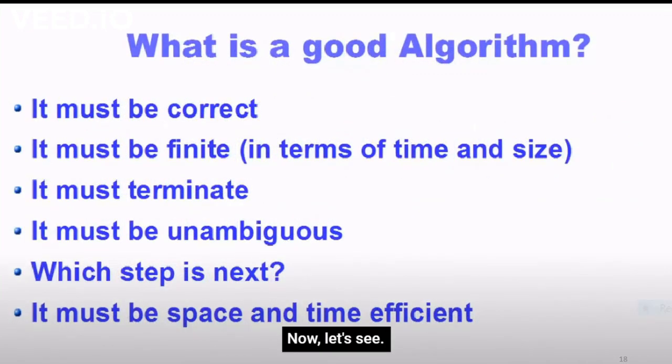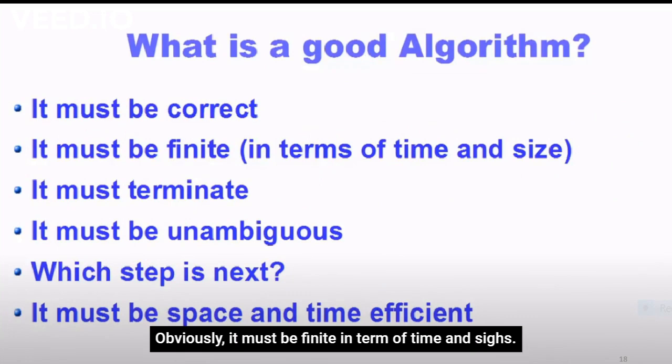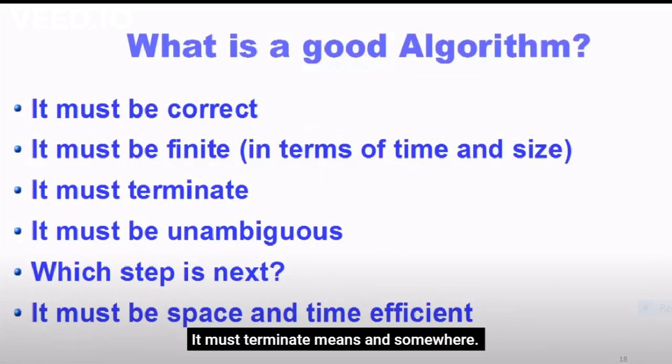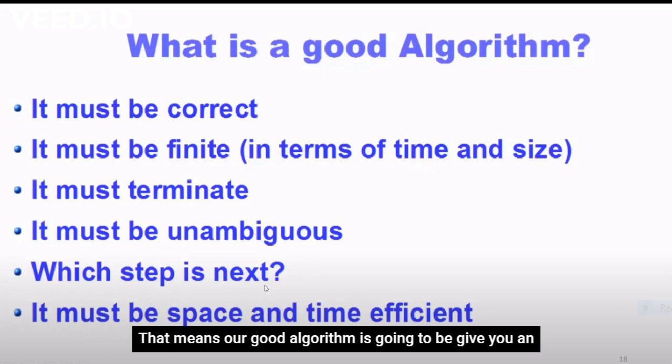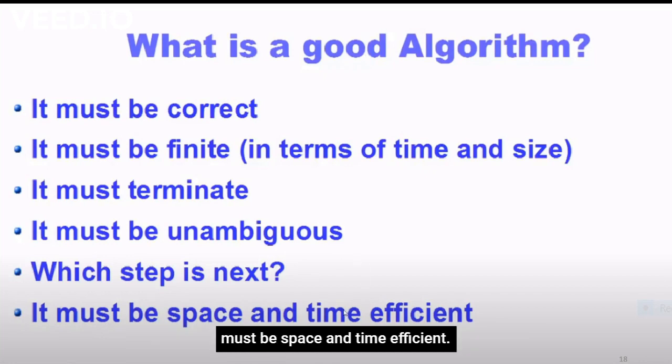Now let's see what is a good algorithm. It must be correct, obviously. It must be finite in terms of time and size. It must terminate somewhere. It must be unambiguous—that means our good algorithm is going to give you an idea about which step is next. And a good algorithm must be space and time efficient.